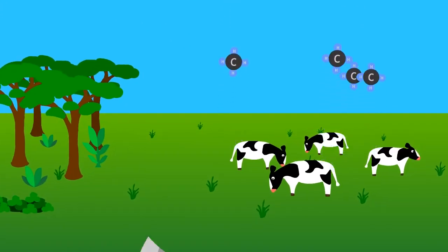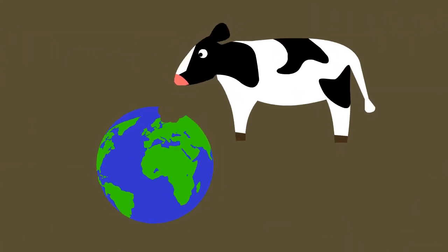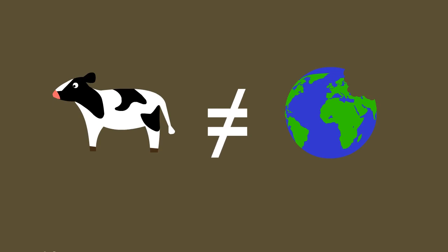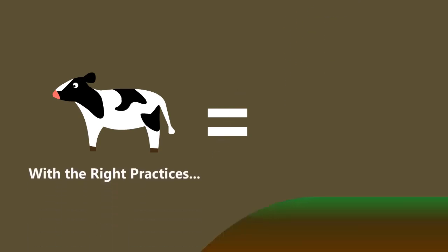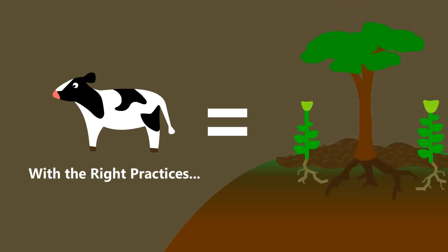From the release of methane to clearing forests for pasture land, cattle raising is known for being very environmentally destructive. But this is not inherent to grazing animals. If the right practices are put in place, enormous amounts of carbon can be sequestered into the ground, soil can be built, and even desertification can be reversed in a matter of years.